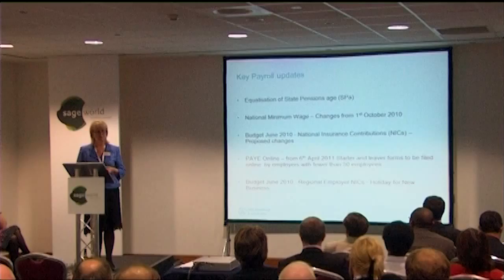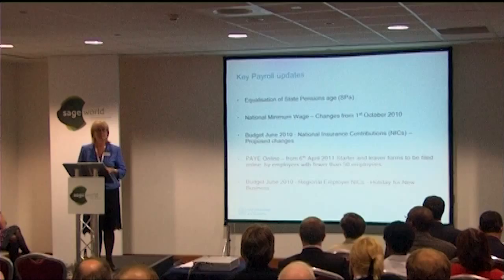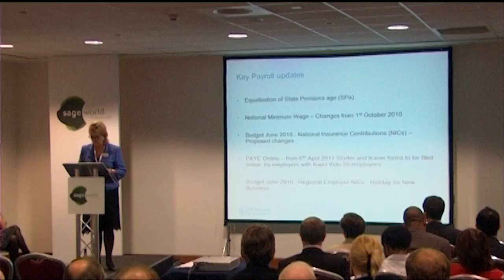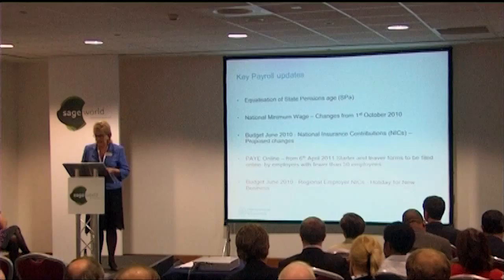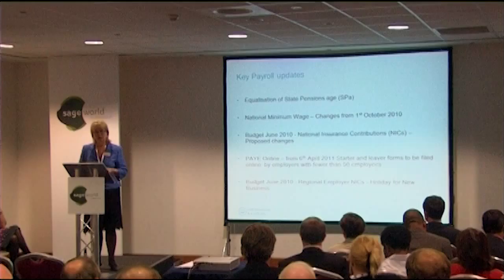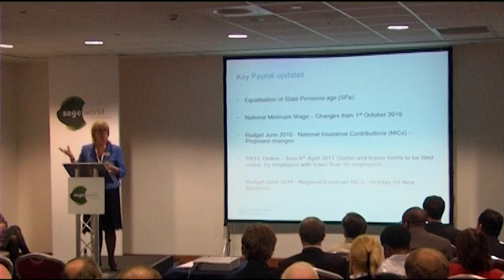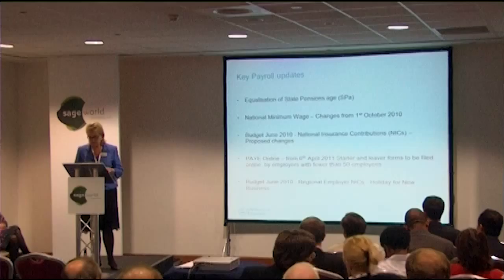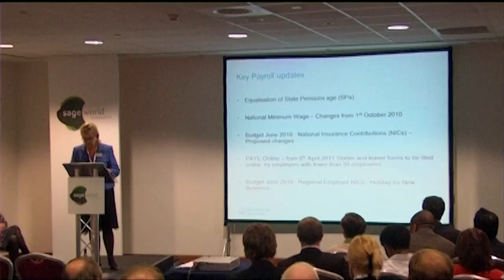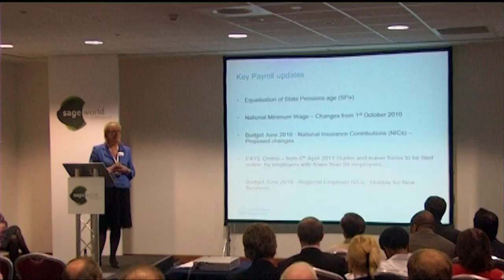National minimum wage changes from the 1st of October this year: the main rate will be payable at £5.93 per hour for workers aged 21 or over. Revised rates will come into force for all age bands — £4.92 an hour for workers aged 18 to 20, and £3.64 an hour for workers aged 16 to 17. All of that detail and information is on the website. There's also an apprentice rate that will apply from the 1st of October: £2.50 per hour for all apprentices aged under 19. So if you do have apprentices, that's going to affect you.